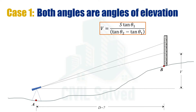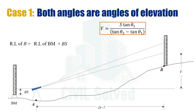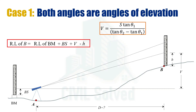Sometimes we are also asked to calculate the reduced level of point B. To do so, we take a point where the reduced level is known — usually the benchmark. Placing the staff at the benchmark, we get the backsight reading as BS. The reduced level of point B is calculated as: reduced level of benchmark plus BS gives the reduced level of the axis of the instrument; adding v gives the reduced level at the upper staff reading point; then subtracting the staff reading h gives the final reduced level of point B. This concludes Case 1 of the tangential method of tacheometric surveying where both angles of target are angles of elevation.